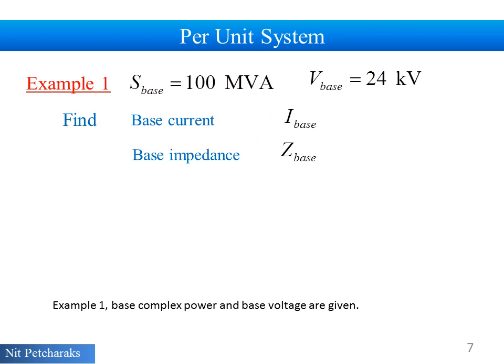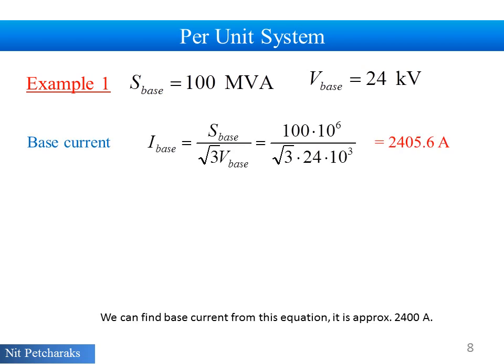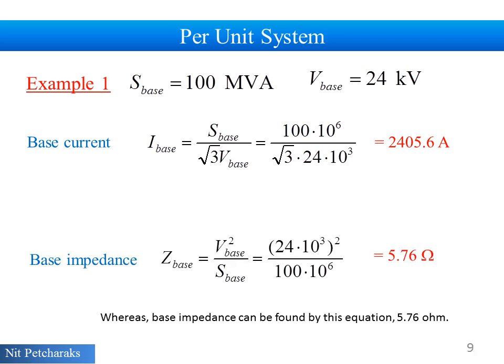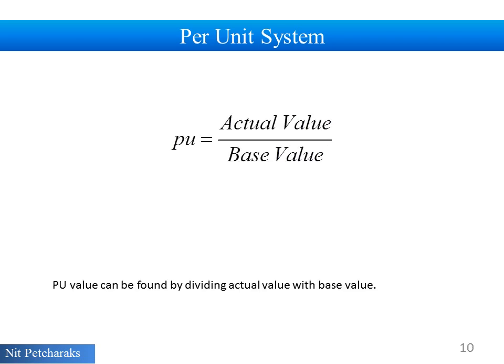Example 1: base complex power and base voltage are given. We can find base current from this equation. It is approximately 2400 amperes. Whereas, base impedance can be found by this equation. It is 5.76 ohm. Per unit value can be found by dividing actual value with base value.